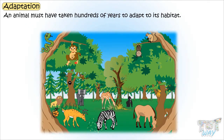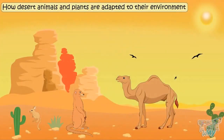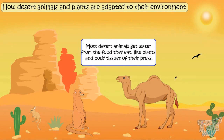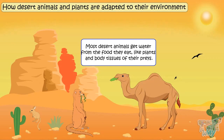Let's see some examples of adaptations. We will learn how desert animals and plants are adapted to their environment. Desert animals need to adapt to deal with scarcity of water and extreme temperatures. Most desert animals get water from only the food they eat, like plants and body tissue of their prey.